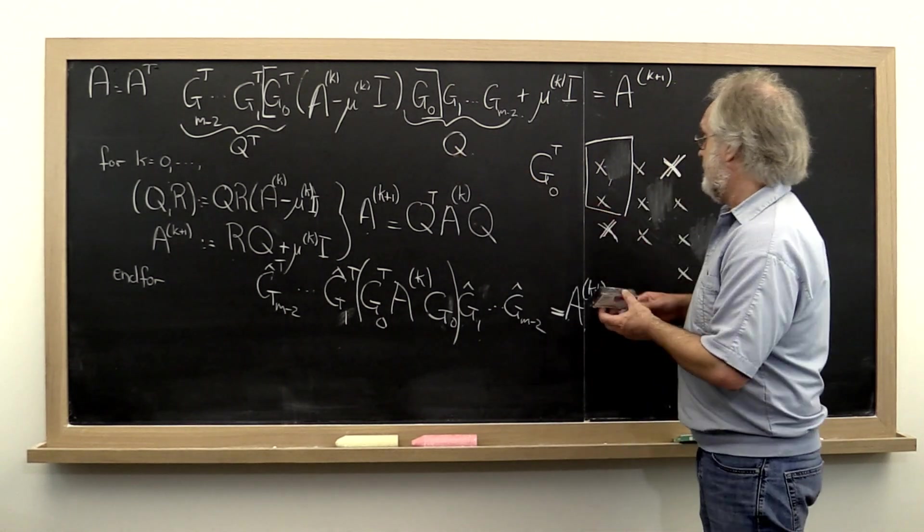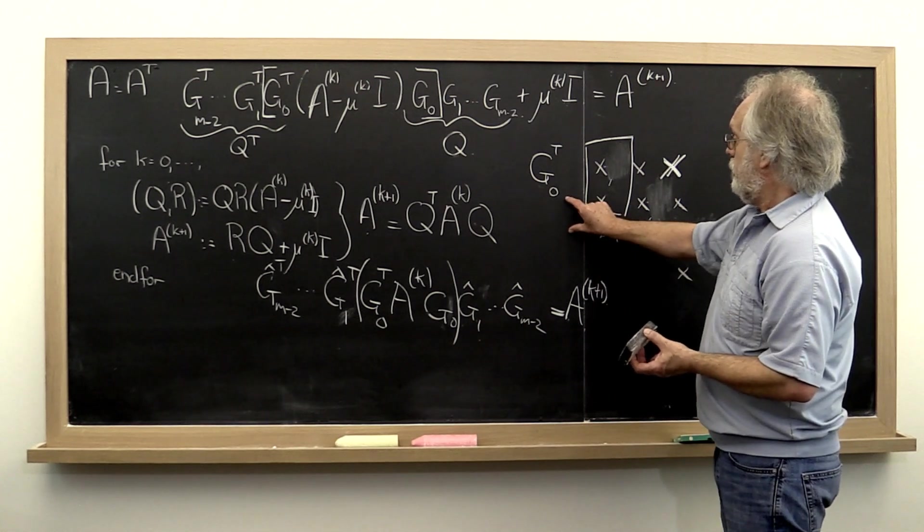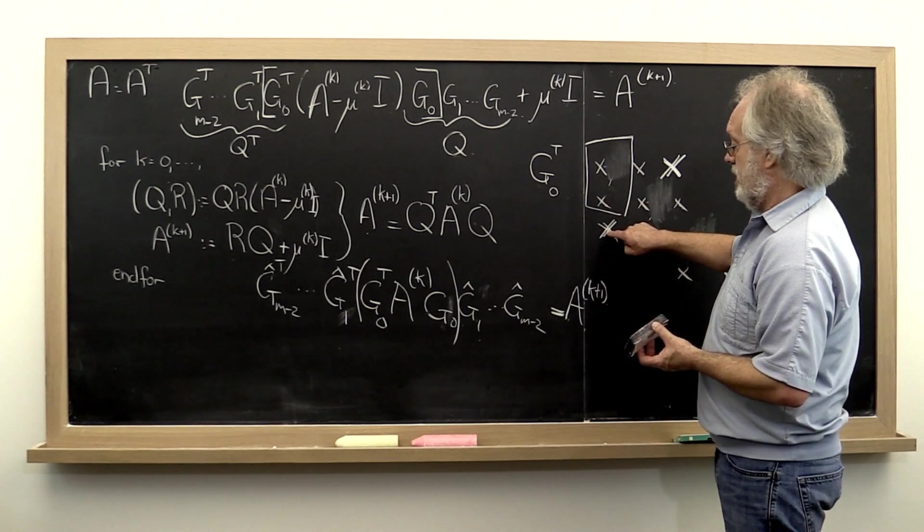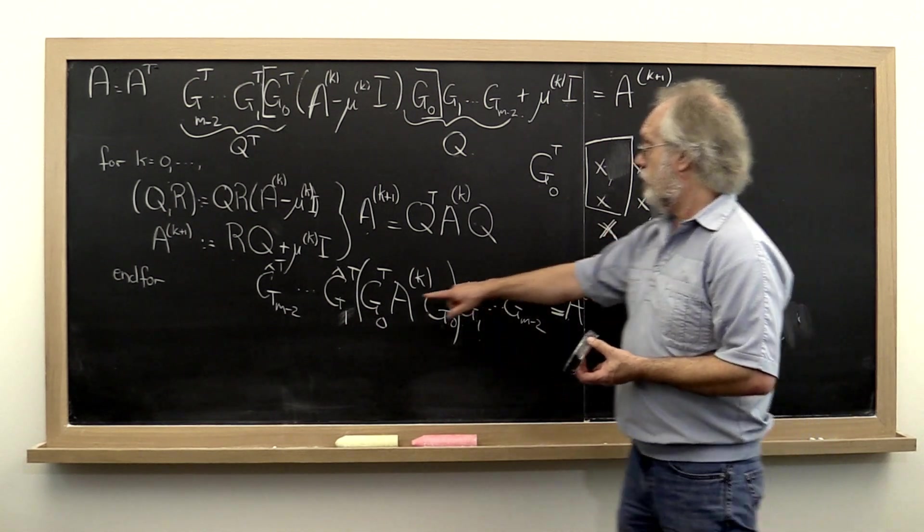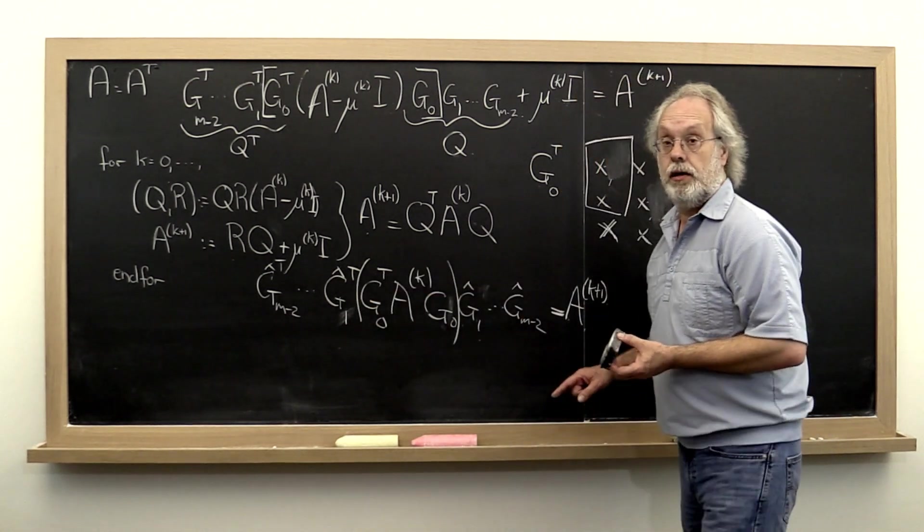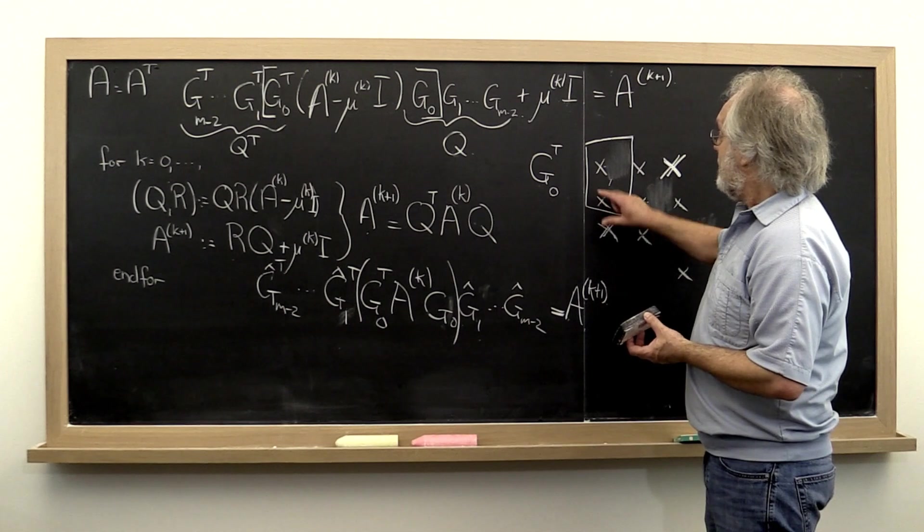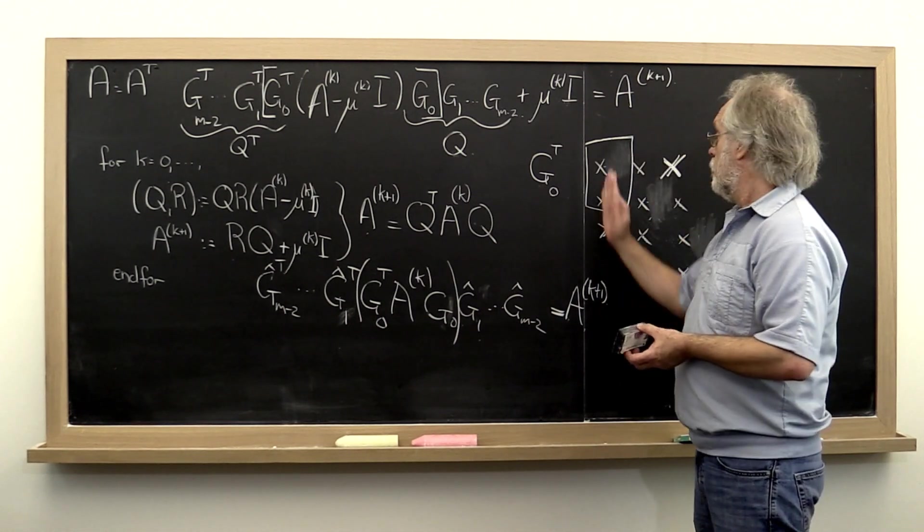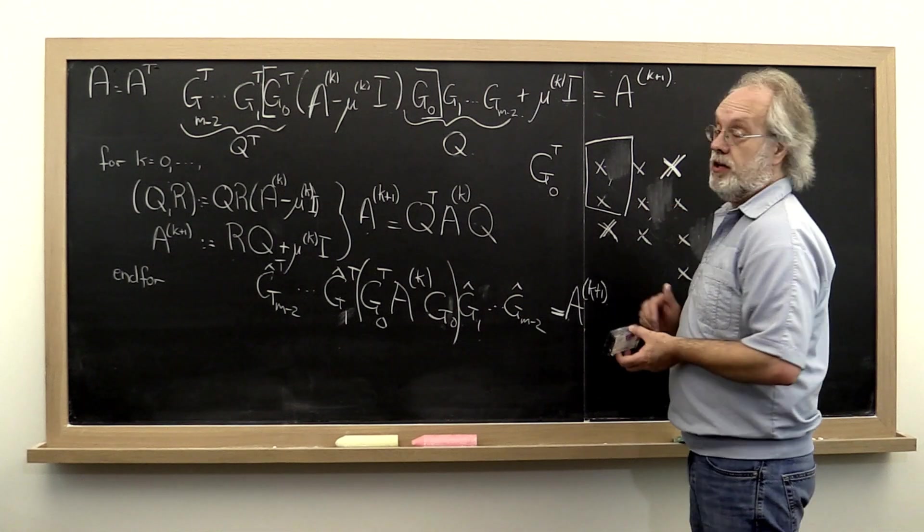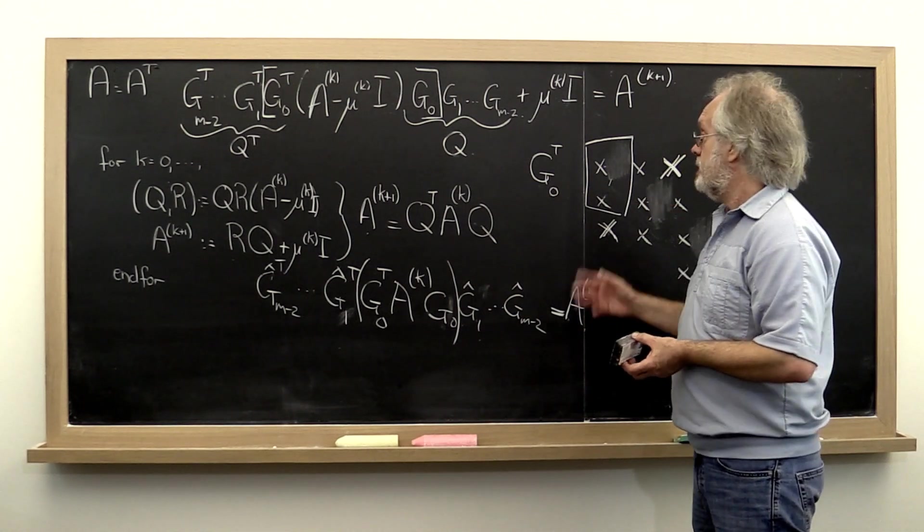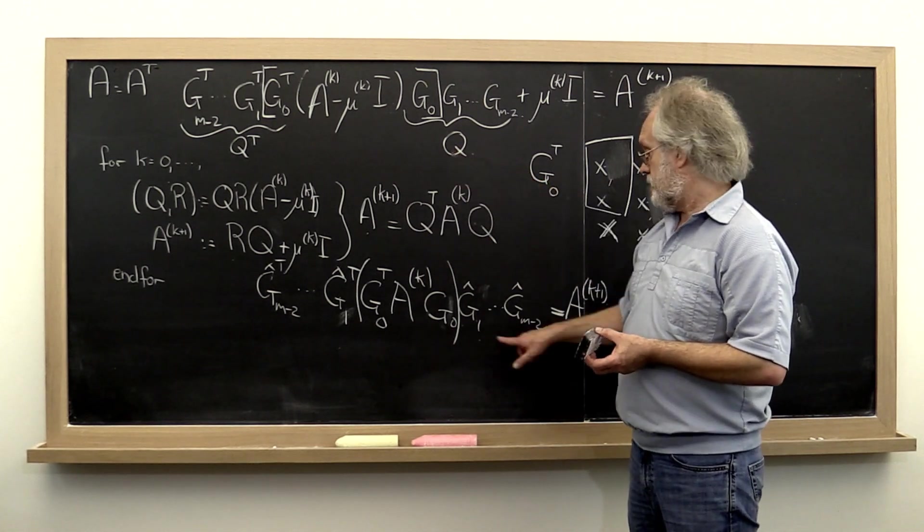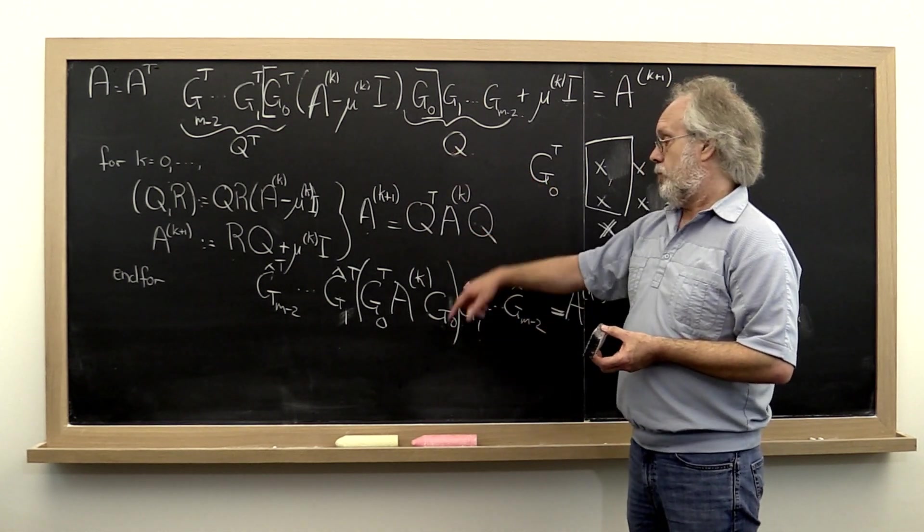Now notice this: we can compute a Givens rotation that introduces a zero right here. That would be our G1 hat. That does not affect the first row of this matrix right here, nor the first column when we apply it from the other side. As a result, it does not corrupt the first column of the matrix Q that would come out of that.